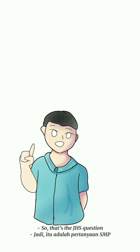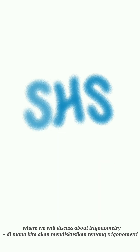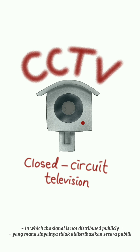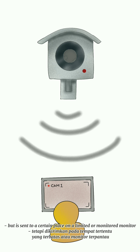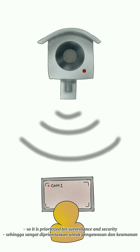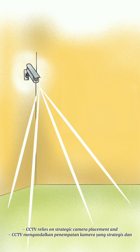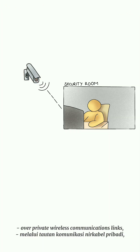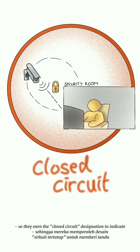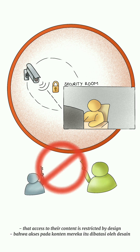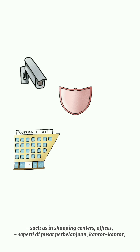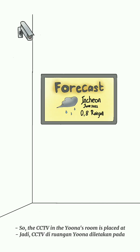Now we move to the senior high school question, which discusses trigonometry. In the room where Yuna watches TV, there is a CCTV. A CCTV (closed circuit television) is a TV system in which the signal is not distributed publicly but sent to a certain place on a limited or monitored monitor, prioritized for surveillance and security. CCTV relies on strategic camera placement and observation of camera input on a monitor; cameras communicate via private wireless links.